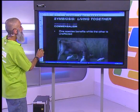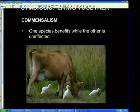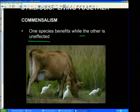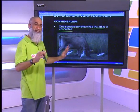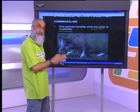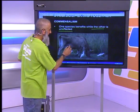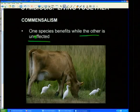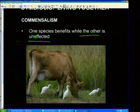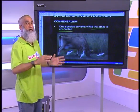Next is commensalism: one species benefits while the other is unaffected. Now, here there's a big debate. Some people say that the benefit here is more leaning towards the egret birds, so therefore it's commensalism. Other authors argue that they both benefit, so it's mutualistic.